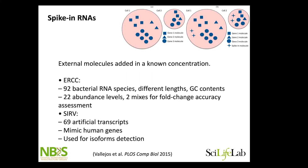Spike-in RNAs are mainly relevant for full-length methods like SmartSeq2, because we can't add spike-ins to DropSeq — we can't make sure to have the same amount in each drop. Basically, they are external molecules that you add in a known concentration per well. One common kit to use is the ERCC spike-in, which is optimized to not be similar to any human or mouse transcripts.